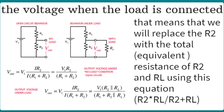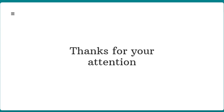We calculate the equivalent resistance of R2 and R_L together, then use it to divide the voltage. To calculate V_out, we use this equation and replace R2 parallel to R_L with the equivalent resistance from that formula. The notation R2 ∥ R_L means the equivalent resistance of R2 and R_L in parallel. We substitute that into both places in the V_out equation. That's it for this lecture — I hope to see you in the next one. Thanks for watching.